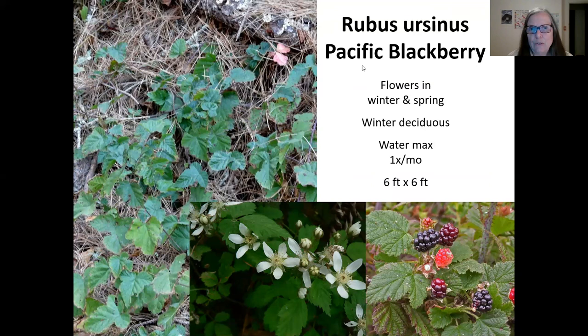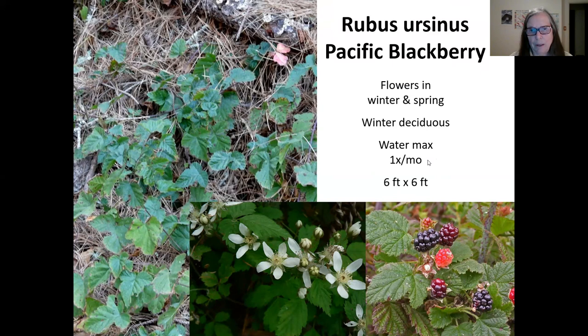The Pacific blackberry — familiar to those who've been in the Santa Cruz mountains — has thorns and flowers in winter and spring, with berries that mature in late spring. They say to water it once a month, but since these grow along creek beds, if you have a dry yard you may need to water up to three or four times a month. They're listed as up to 6 feet tall and 6 feet wide, though we know how these can spread. You can train them on a trellis.